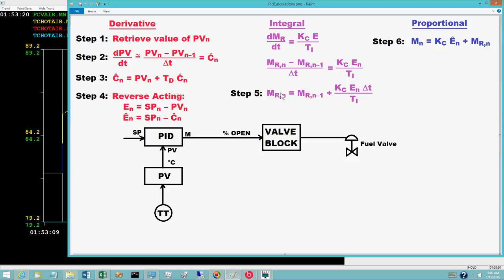Reset windup and reset windup protection are also deferred to a subsequent video. Under certain conditions, the values computed for the controller output bias M sub r sub n can become very large, either positively or negatively. The result is known as reset windup. To prevent this from occurring, the computations must include logic, known as reset windup protection.